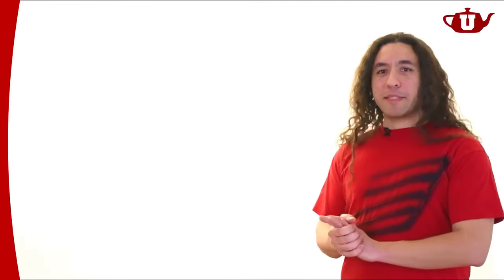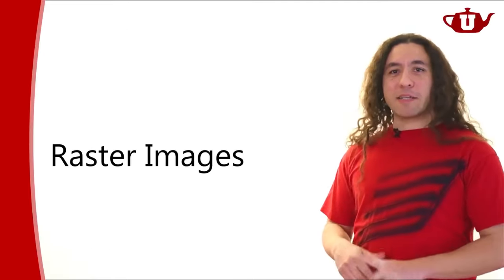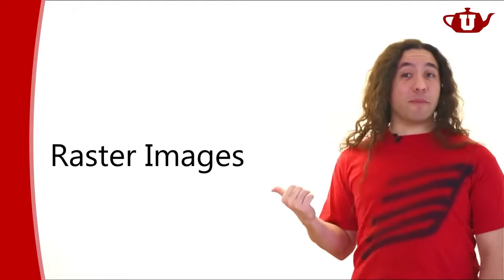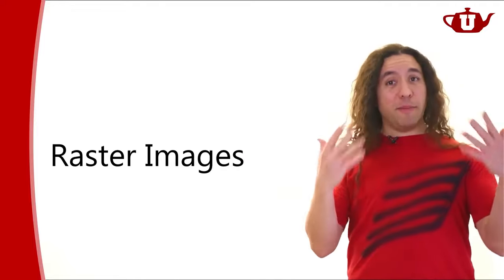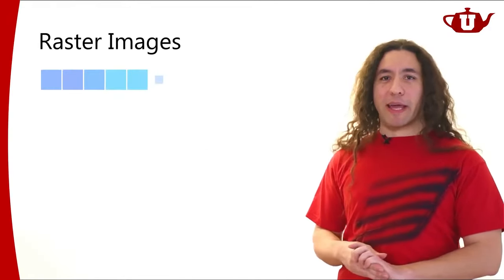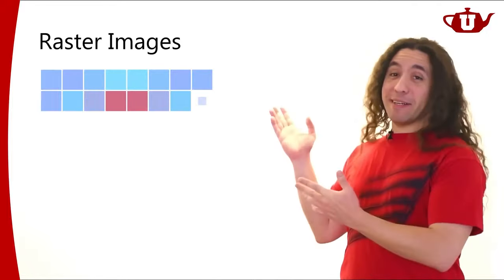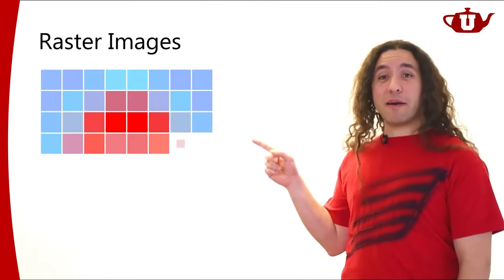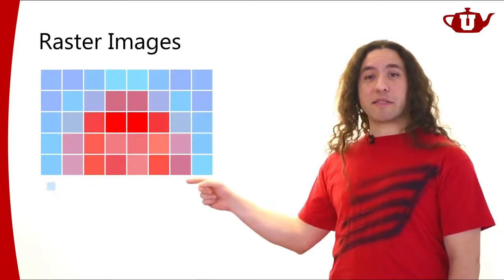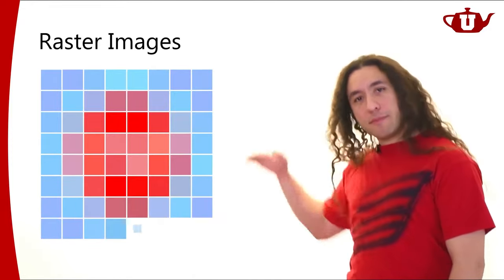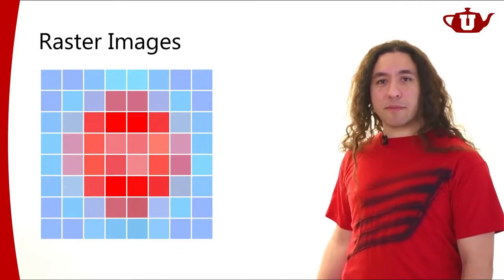That's the plan for today. Let's start with raster images. Images are what we're going to be producing — they're the output of rendering. A raster image is made out of pixels. Note the order I'm presenting these pixels: this is what we call the scanline order, from left to right, top to bottom.